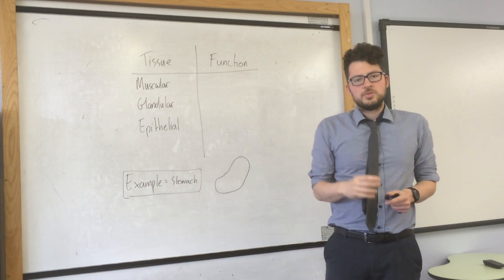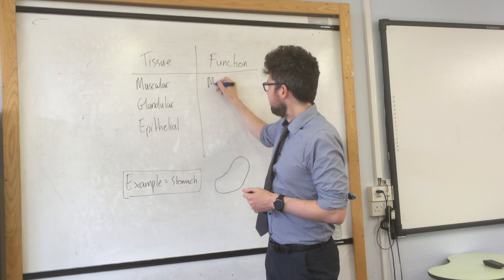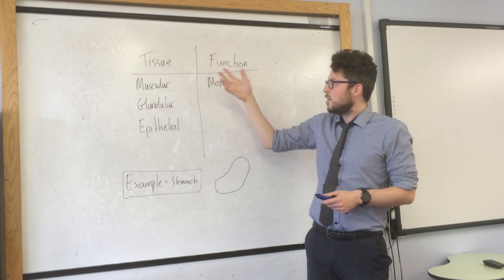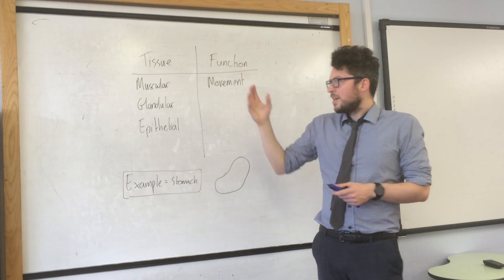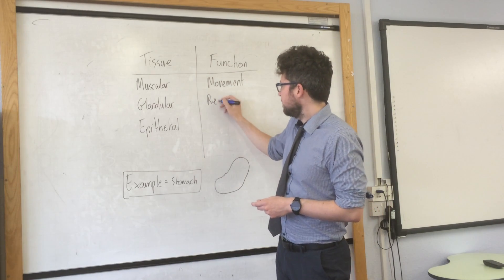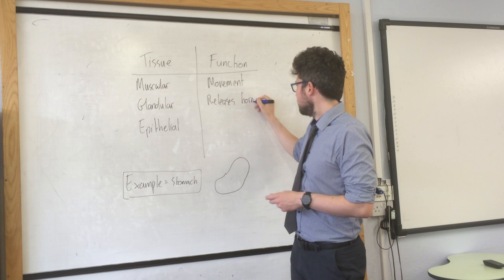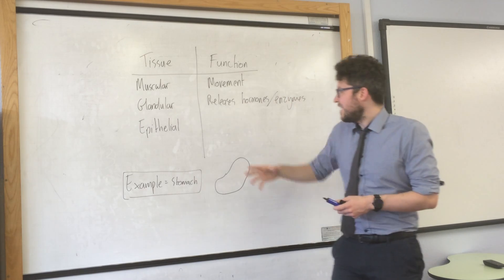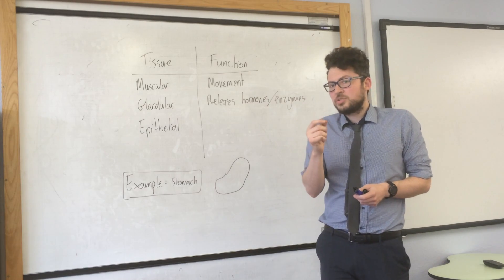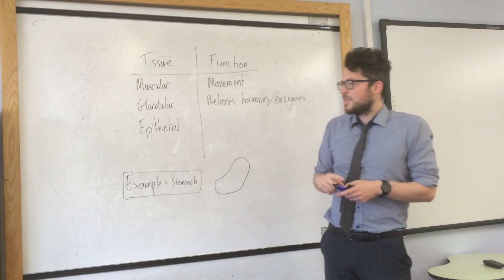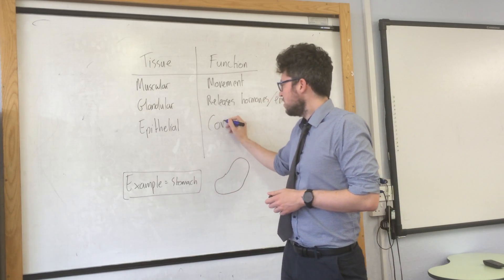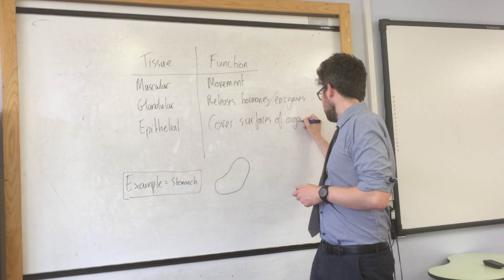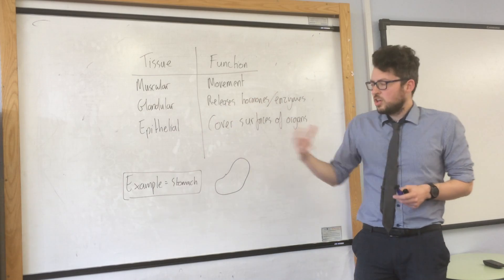Now there are a few examples of types of tissue that you need to know. These are found in animals. Muscular tissue causes movement — muscle cells working together would be muscle tissue and that causes movement. Glandular tissue releases hormones and enzymes, which are capable of breaking down our food and allowing us to absorb it. And finally we have epithelial tissue, which covers the surfaces of our organs.